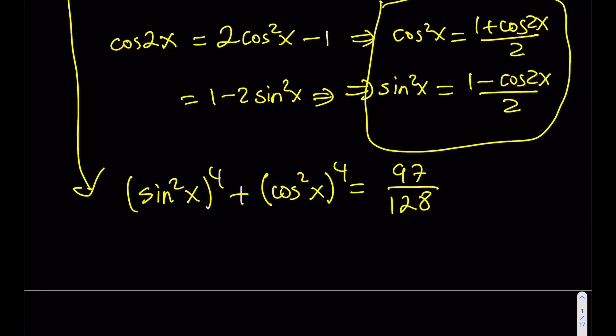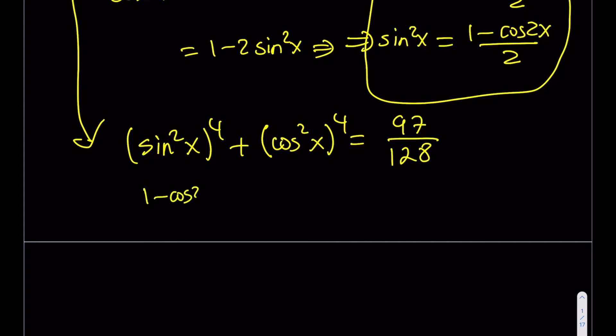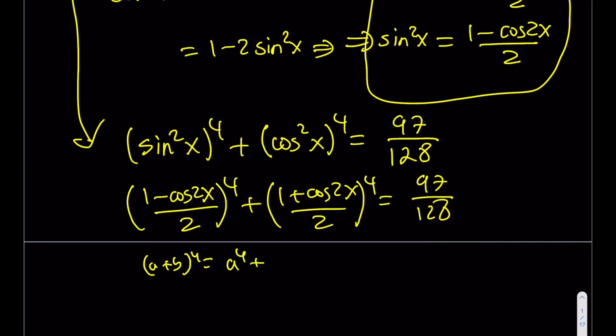Now, I'm going to replace sine squared with 1 minus cosine of 2x over 2 to the fourth power. And this is going to give me 1 plus cosine of 2x over 2 to the fourth power. And when I do the math here, from a plus b to the fourth power and a minus b to the fourth power, a lot of the terms are going to cancel out. What is not going to cancel out? If you consider a plus b to the fourth power, it's going to be a to the fourth plus 4a cubed b plus 6a squared b squared. These terms are going to come with negatives and they're going to cancel out. So basically, what I'm going to be getting is these terms, I'll be getting them twice.